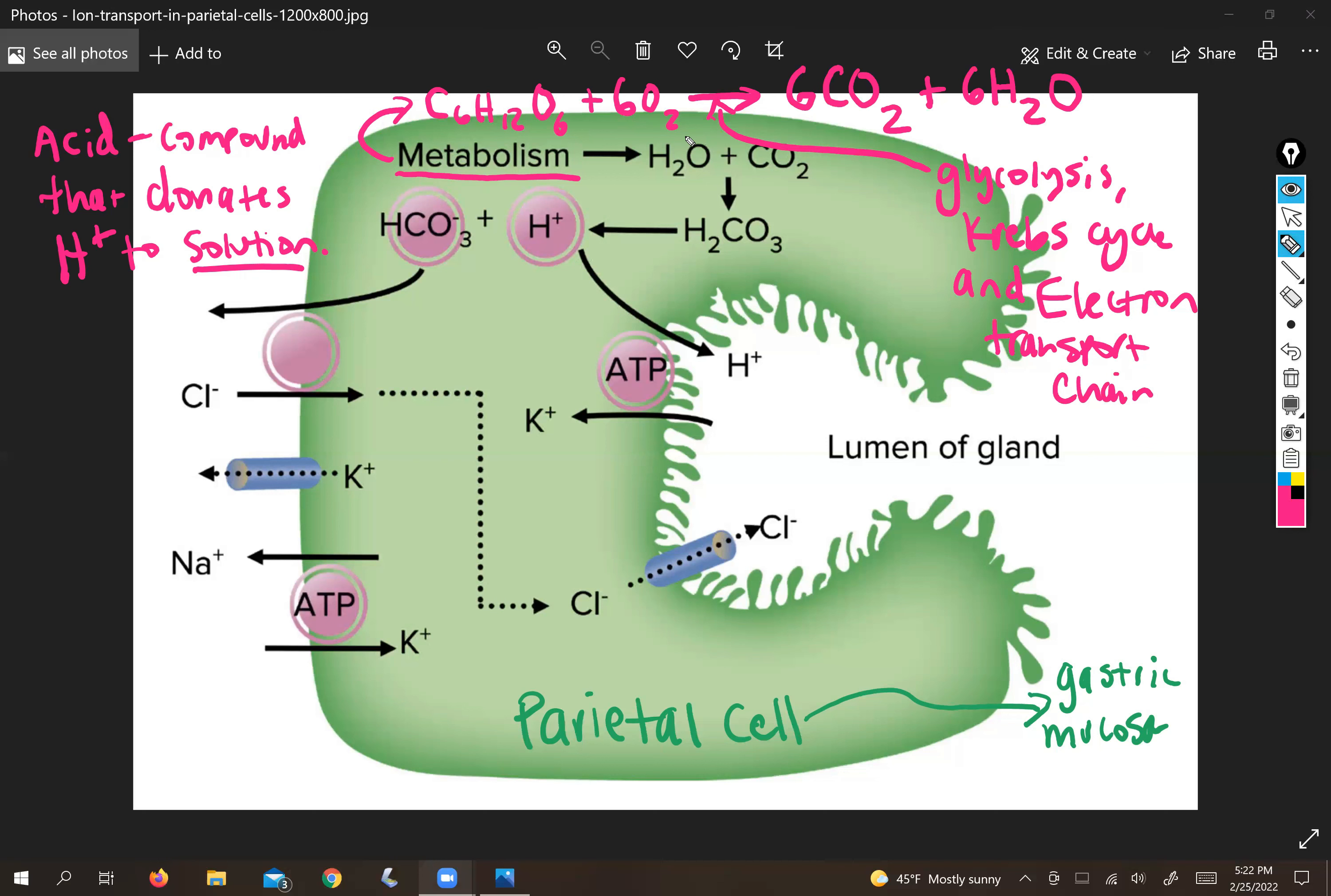And then we've talked about this carbonic anhydrase reaction a lot. So one cool thing that your cells can do is make water from scratch, we call this metabolic water. It's not water that you drank, it's water that you made. And then of course, this is our familiar CO2, which is a byproduct of cellular respiration.